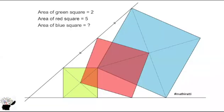Welcome to my YouTube channel. Today we are going to consider this question. We have two inclined squares and also one small square. The area of the green square is given as 2, the area of the red square is given as 5. We are supposed to find the area of the blue square. Could you figure out the solution of this problem? Just pause the video and give it a try.